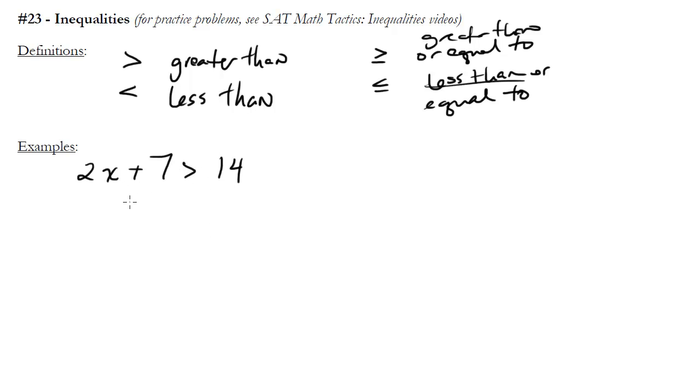So for instance, let me subtract 7 from both sides. I'm going to get 2x is greater than 7. Divide both sides by 2, I get x is greater than 7 halves. Okay, that's it. So all the values of x that are greater than 7 halves would satisfy this, not including 7 halves, but greater than it.